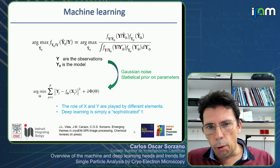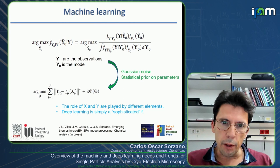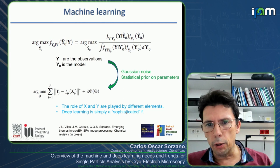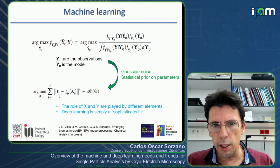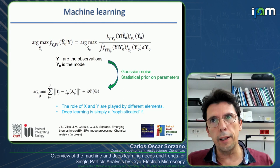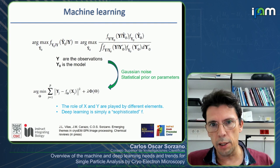The regularization comes from the statistical prior. Here x is a predictor that predicts your measurements, and y plays different roles depending on your problem. Deep learning in this setup is simply a more sophisticated f. Otherwise, the classical image processing formulation and the deep learning formulation are rather similar.